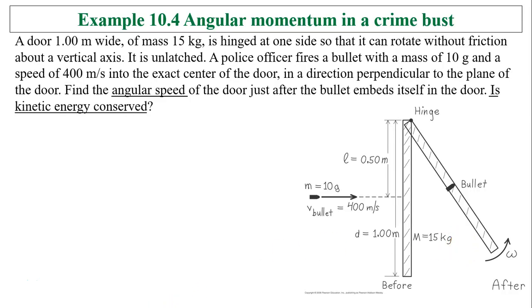Another example, angular momentum in a crime bust. A door of 1 meter wide, a mass of 15 kilograms, is hinged at one side so that it can rotate without friction about a vertical axis. This is almost like a bar rotating at one end. It is unlatched. A police officer fires a bullet with a mass of 10 grams and a speed of 400 meters per second into the exact center of the door, in a direction that's perpendicular to the plane of the door. Find the angular speed of the door just after the bullet embeds itself in the door. And the other question is, is the kinetic energy conserved? As you probably can see, kinetic energy is not conserved because this is a completely inelastic collision.